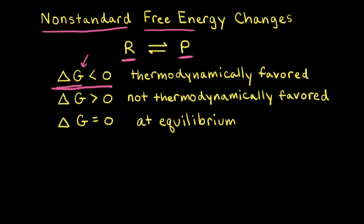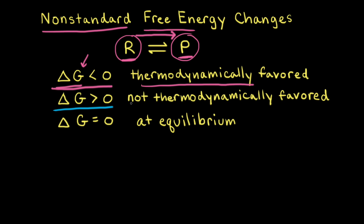When delta G is less than zero — so when delta G is negative — the forward reaction is thermodynamically favored. Therefore, the reactants will turn into the products, the amount of products will increase, and the amount of reactants will decrease. When delta G is greater than zero — so when delta G is positive — the forward reaction is not thermodynamically favored, which means the reverse reaction is favored. So the net reaction goes to the left to increase the amount of reactants and decrease the amount of products.